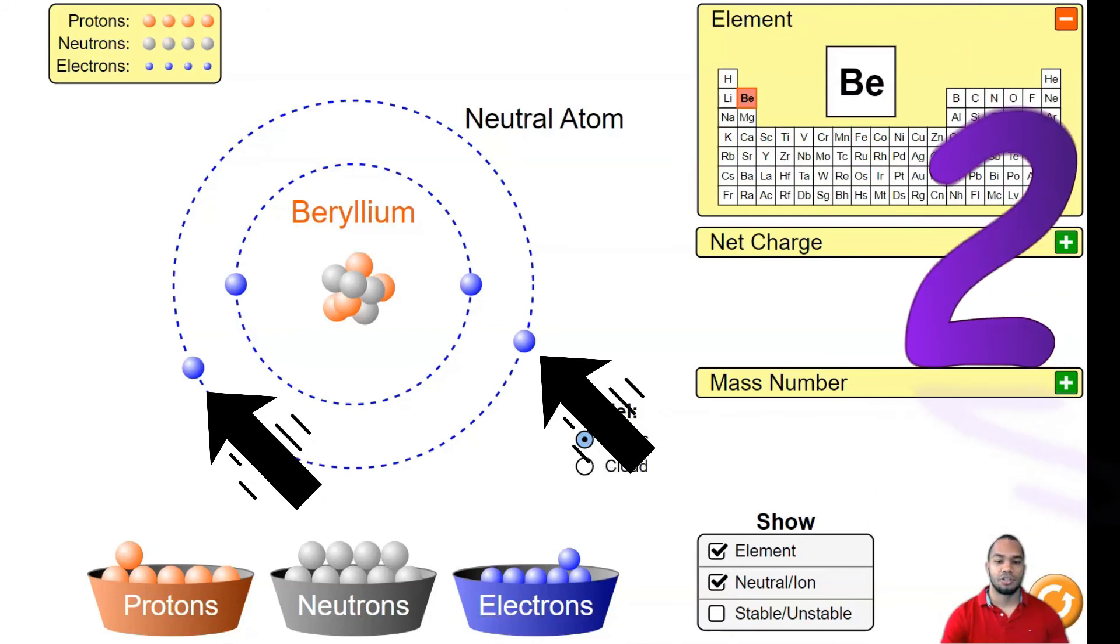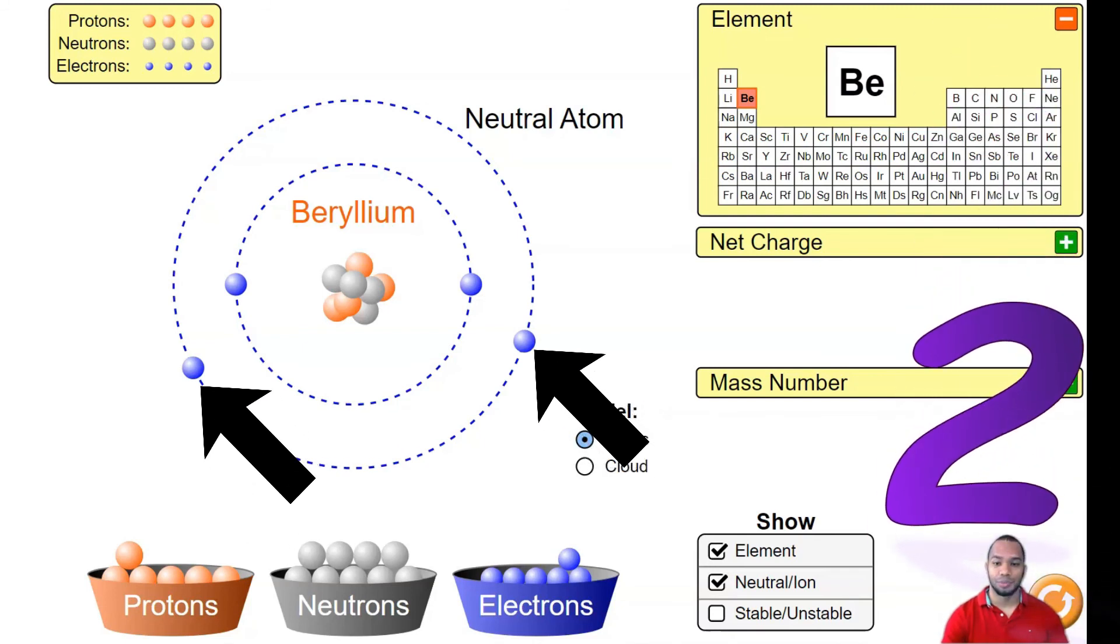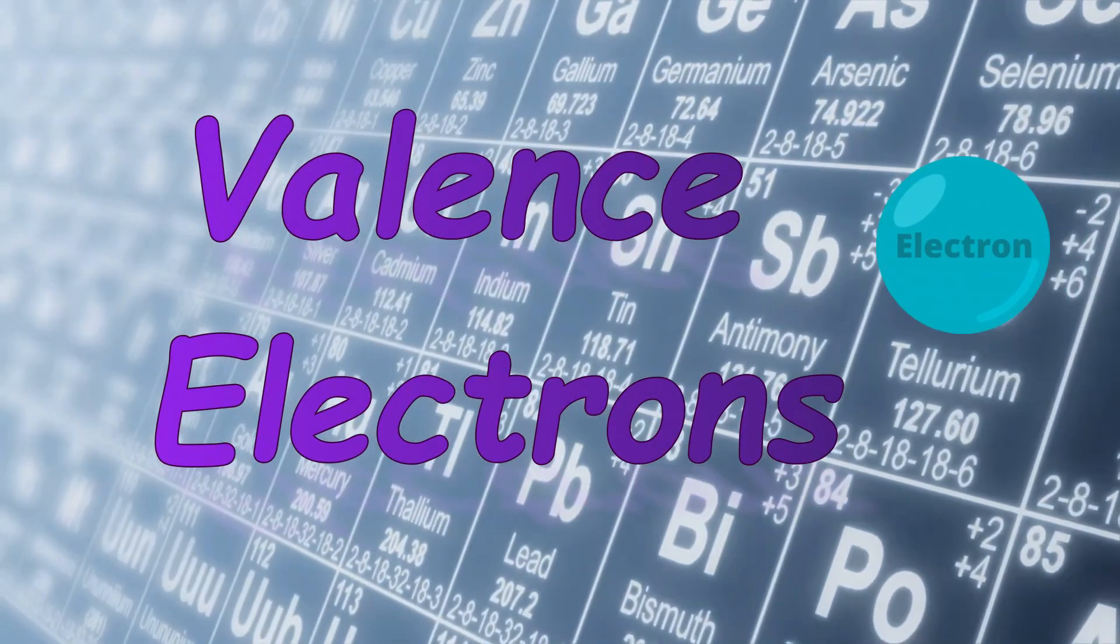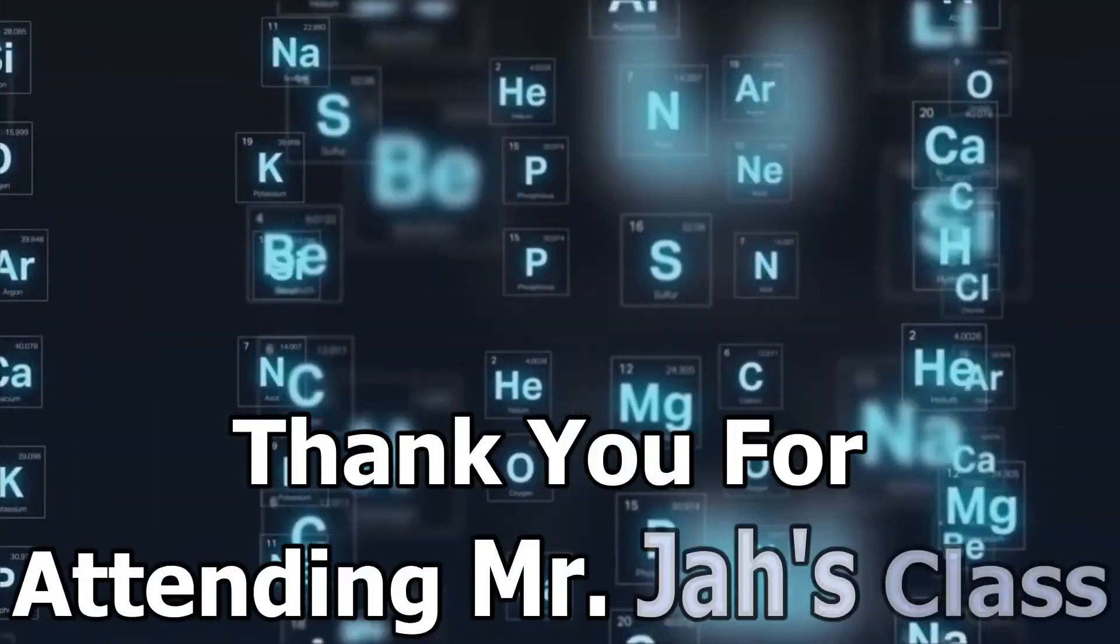Beryllium has two valence electrons because it is in group two. So that is how you find valence electrons on the periodic table.